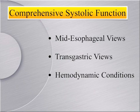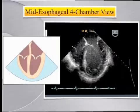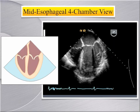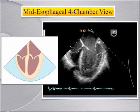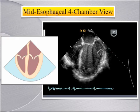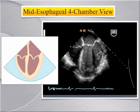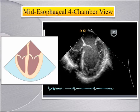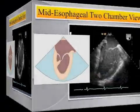Imaging planes for comprehensive systolic function assessment include mid-esophageal and transgastric views. Hemodynamic measurements for calculations can be obtained through Doppler imaging of deep transgastric or transgastric long axis views. The mid-esophageal four-chamber view is obtained at zero degrees. It can demonstrate wall motion of the septal and lateral walls at the basal, mid, and apical levels, and can also be used as part of a volumetric assessment by Simpson's method of disks, where the LV chamber is traced in the two and four chamber views to calculate LV volume.